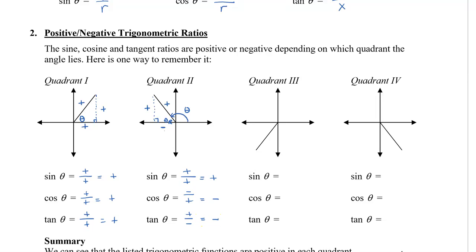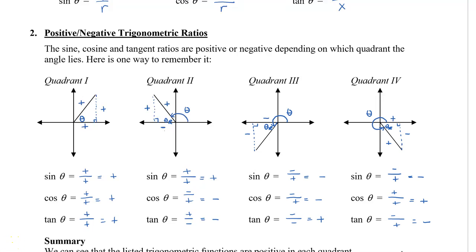Try quadrant 3 and quadrant 4 on your own first. In quadrant 3, the x and y values are both negative, but the radius is positive. So sine and cosine are negative, but tangent is positive. In the fourth quadrant, x is positive, y is negative, and the radius is positive. So sine is negative, tan is negative, and cosine is the only trig ratio that is positive in the fourth quadrant.